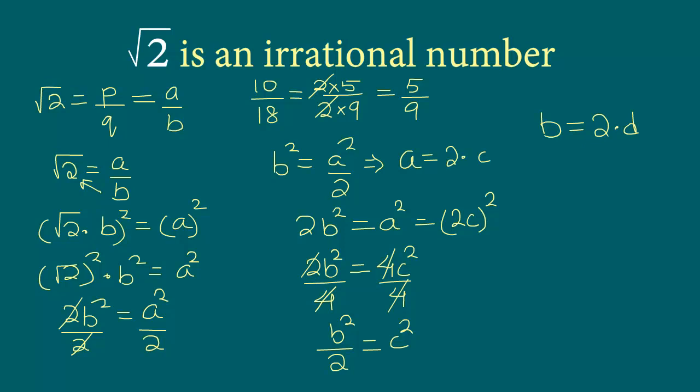So let's see what we have right now. So we have a equals 2 times c, where c is an integer. We have just now seen b equals 2 times d, where d is an integer. So seems like a and b have the number 2 as a common factor. But did we not start by saying that square root 2 equals a and b, where a and b they do not have any common factor? But we are realizing that indeed a and b have a common factor.